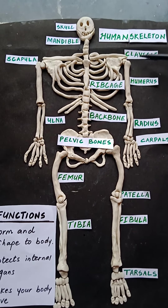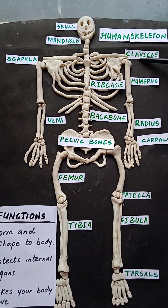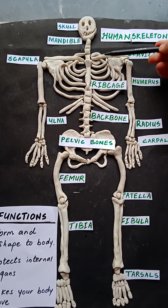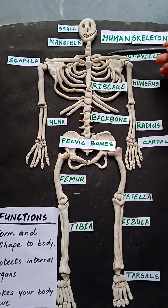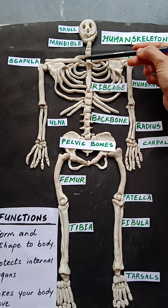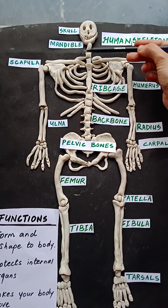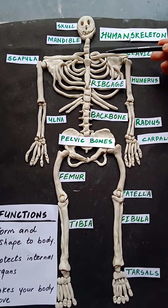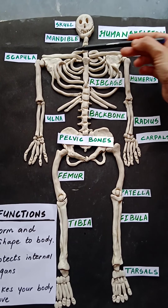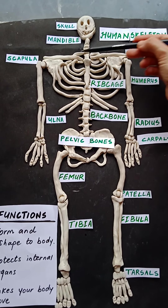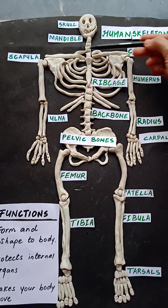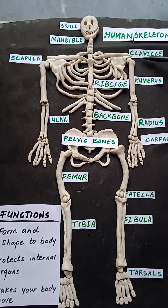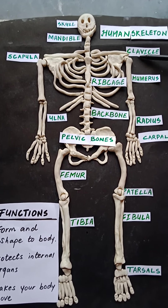Now let's move on to the next bone, which is the clavicle. This is also called your collar bone — it is the place where the collar of your shirt rests. These two bones are also called your collar bones or clavicle.